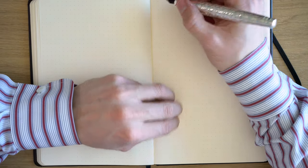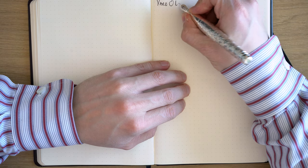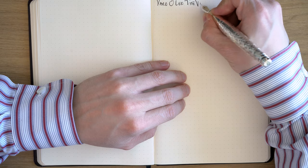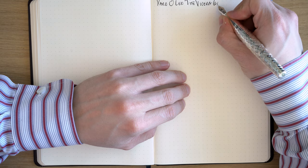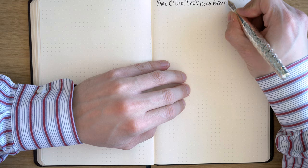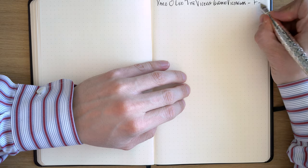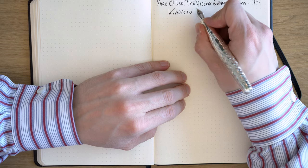Let's do a writing sample. This is the Yard-O-Lead Viceroy Grand Victorian. Wait, it's got a long name. Okay, this is a fine, and this is Kaweco Black.